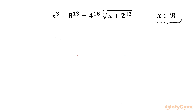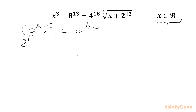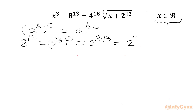Let us get started by writing one exponential property: a^b whole power c equals a^(b×c). I will use this property for 8^13, which we can write as (2³)^13, and using this exponential property, we get 2^(3×13) = 2^39.